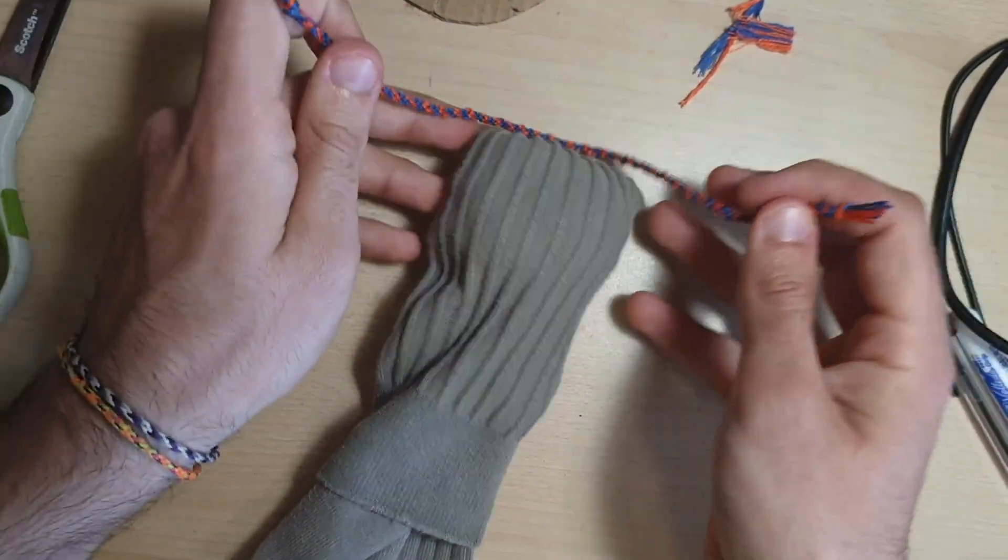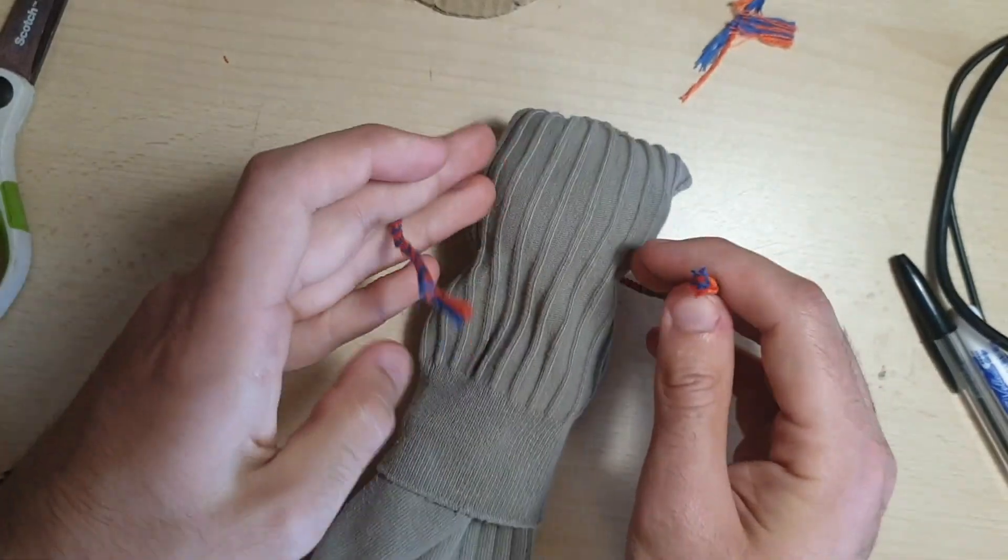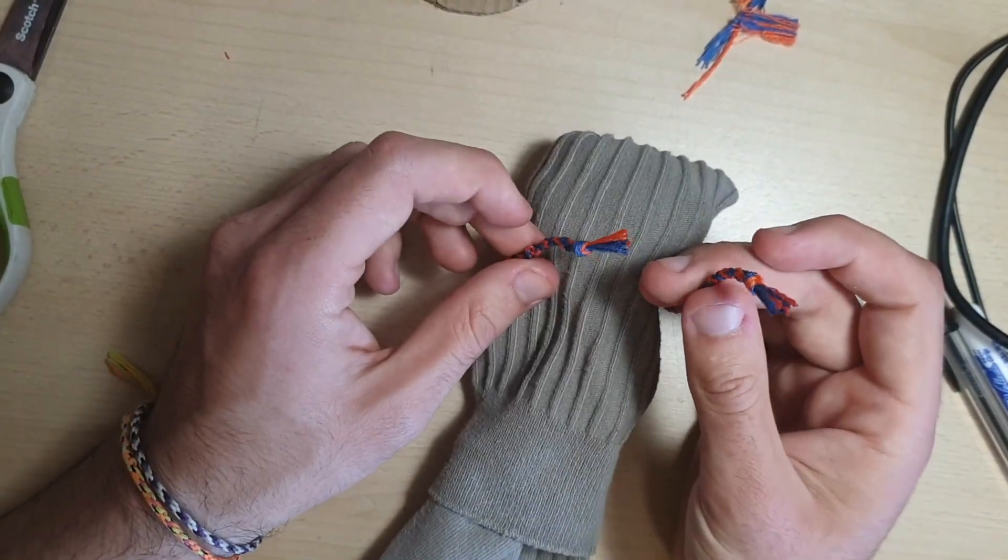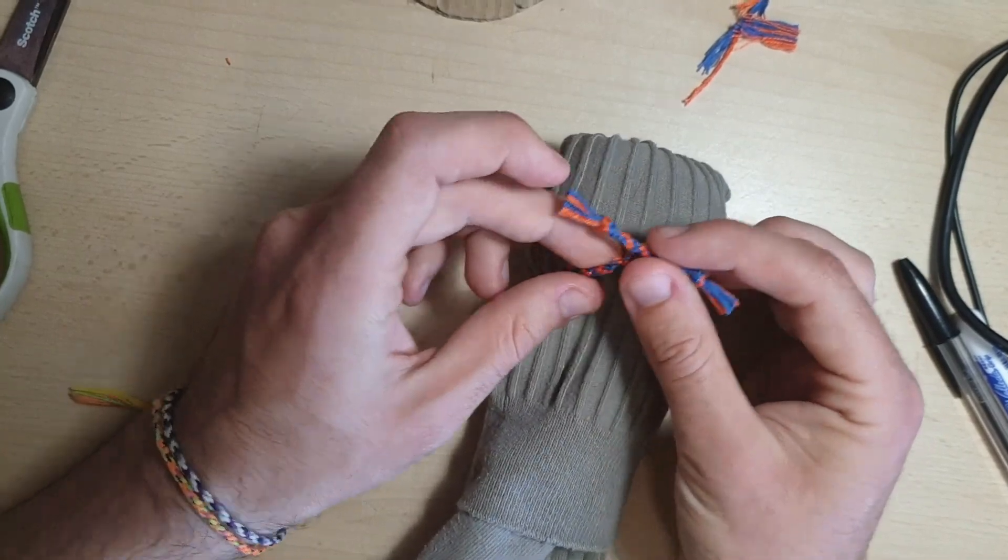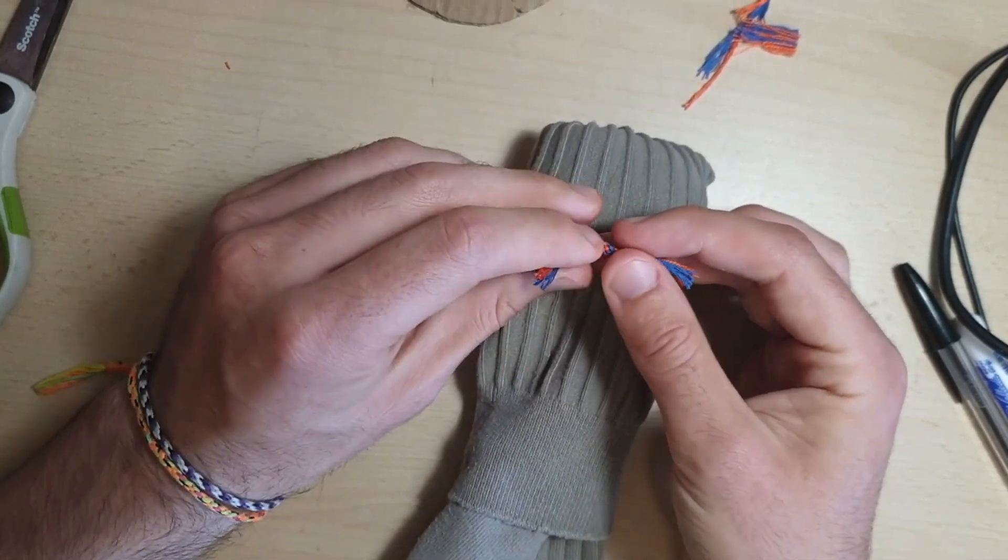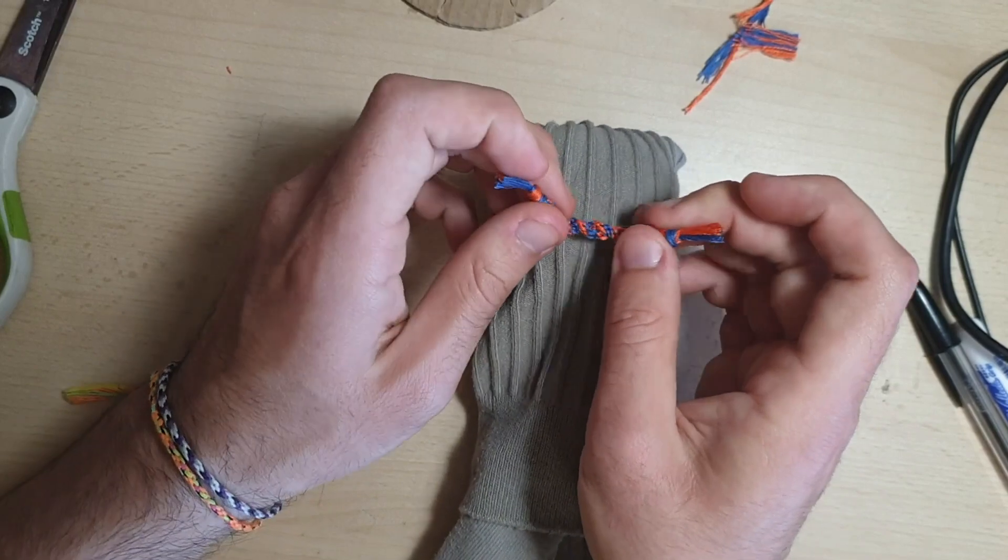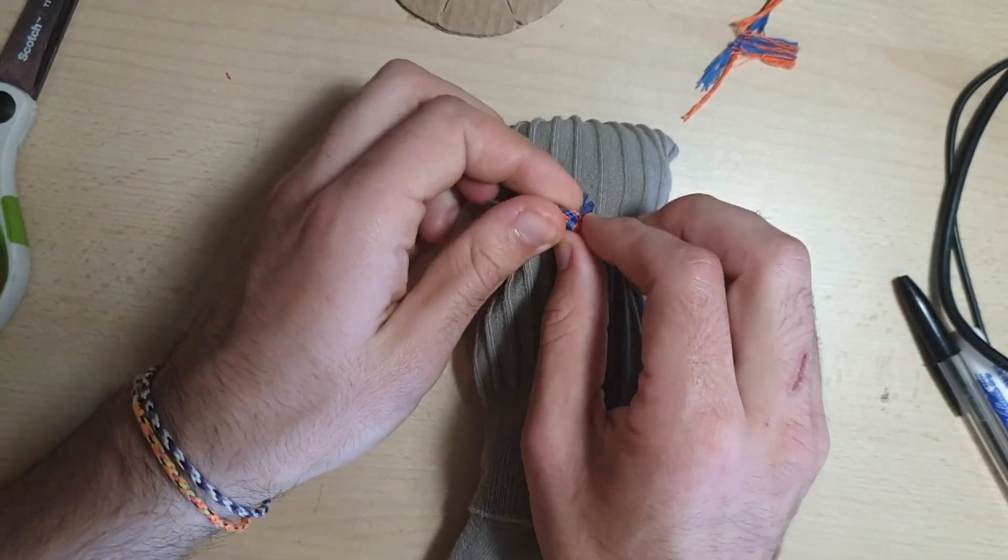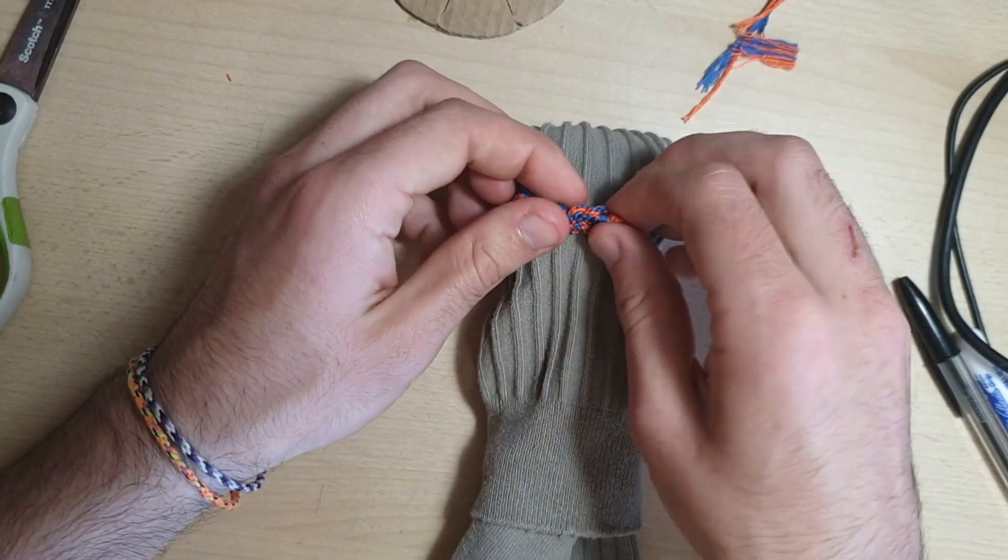So you get the bracelet, put it around the arm, and you take the right hand side, put it over the top, and go under. And you do the same with the left over and under, like this.